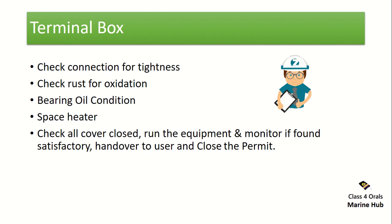Check the terminal box — verify the tightness of connections, check for oxidation, rust, or any foreign particles, and check the bearing oil condition on the alternator — it should be clear with no foreign traces. The space heater should be working — press the button and check whether the heating of the cabinet and terminal box is functioning. Check that all covers are closed and all screws and fittings are tight.